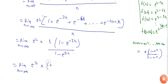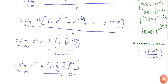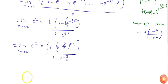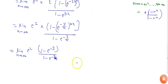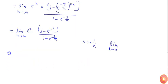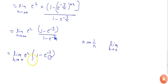Substituting h = 1/n, I get 1 minus e^(-3/n) in the numerator and 1 minus e^(-3/n) in the denominator. As n tends to infinity, the numerator becomes 1 minus e^(-3). To handle the denominator, I change the variable by letting h = 1/n, so that as n tends to infinity, h tends to 0. The limit becomes: e² times (1 - e^(-3)) divided by (1 - e^(-3/n)).